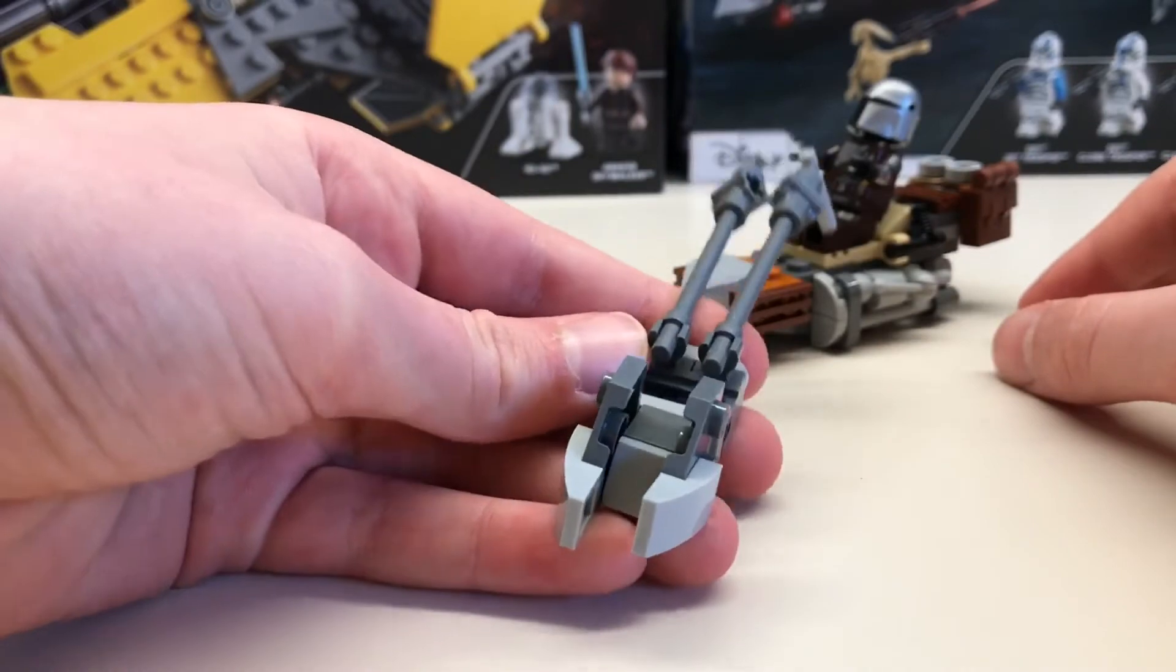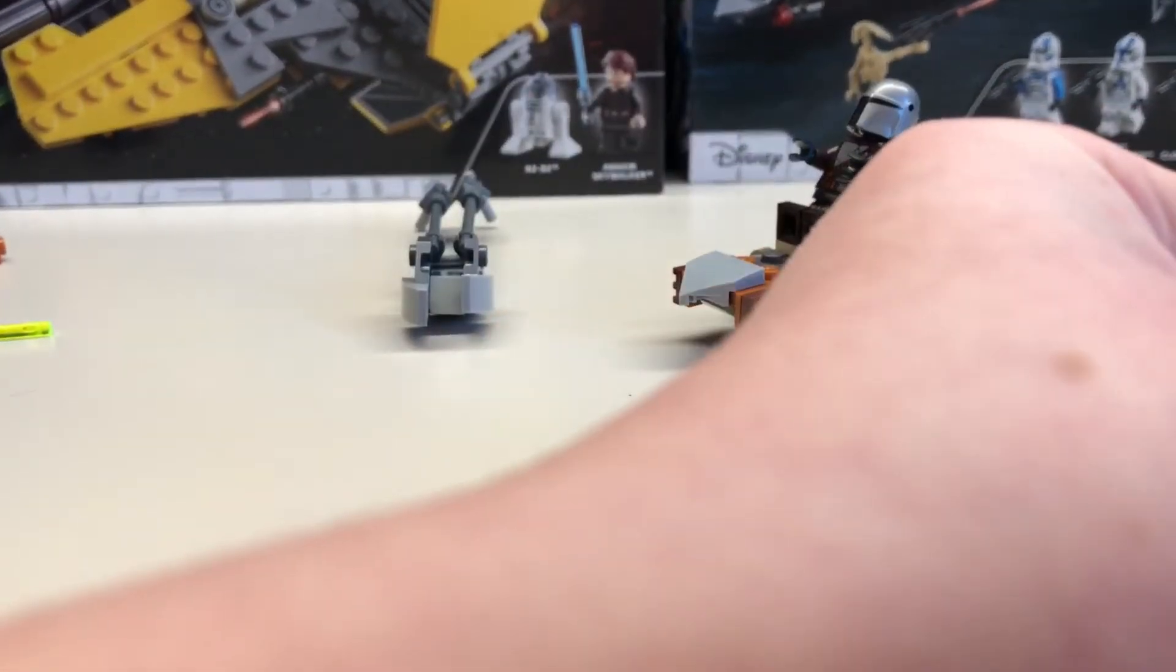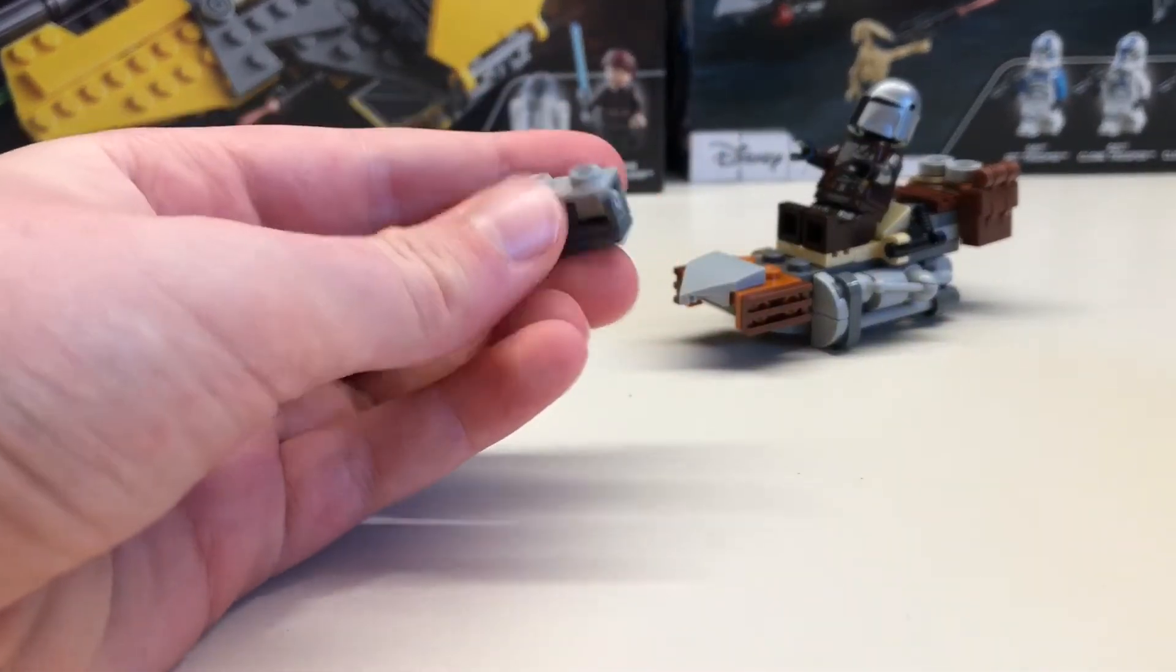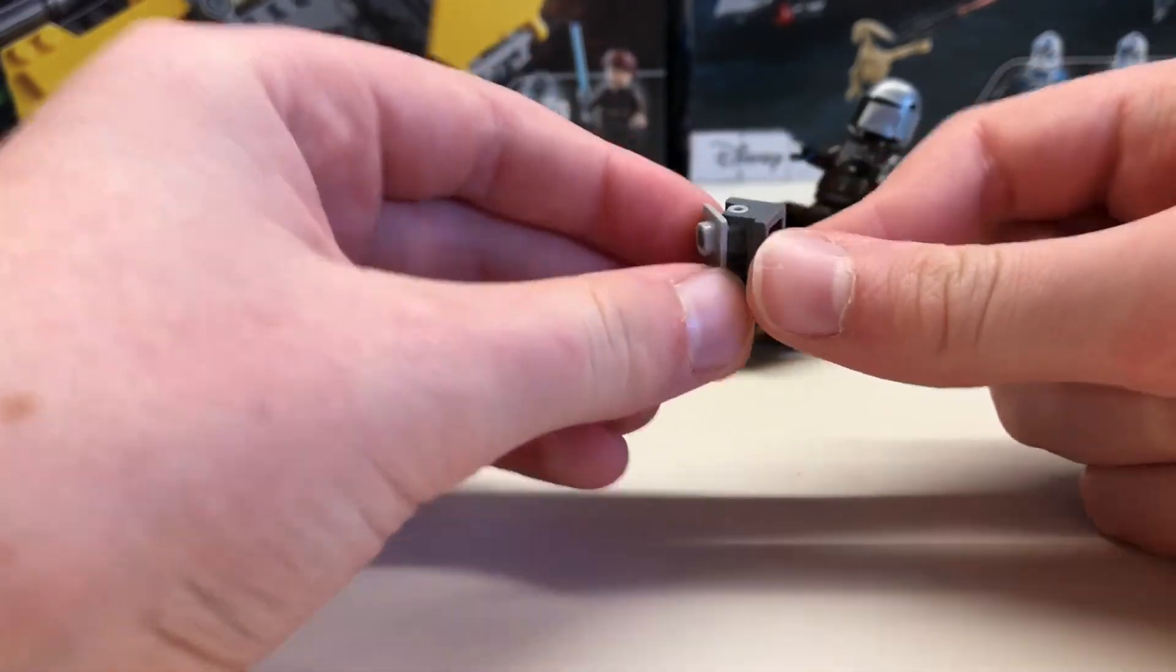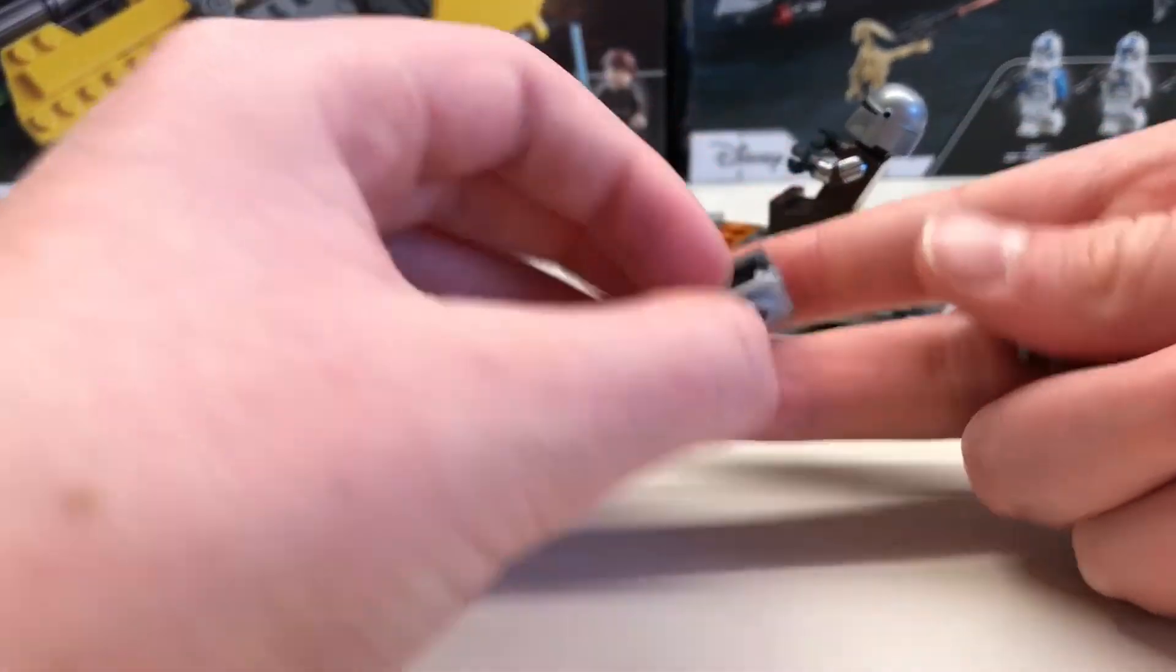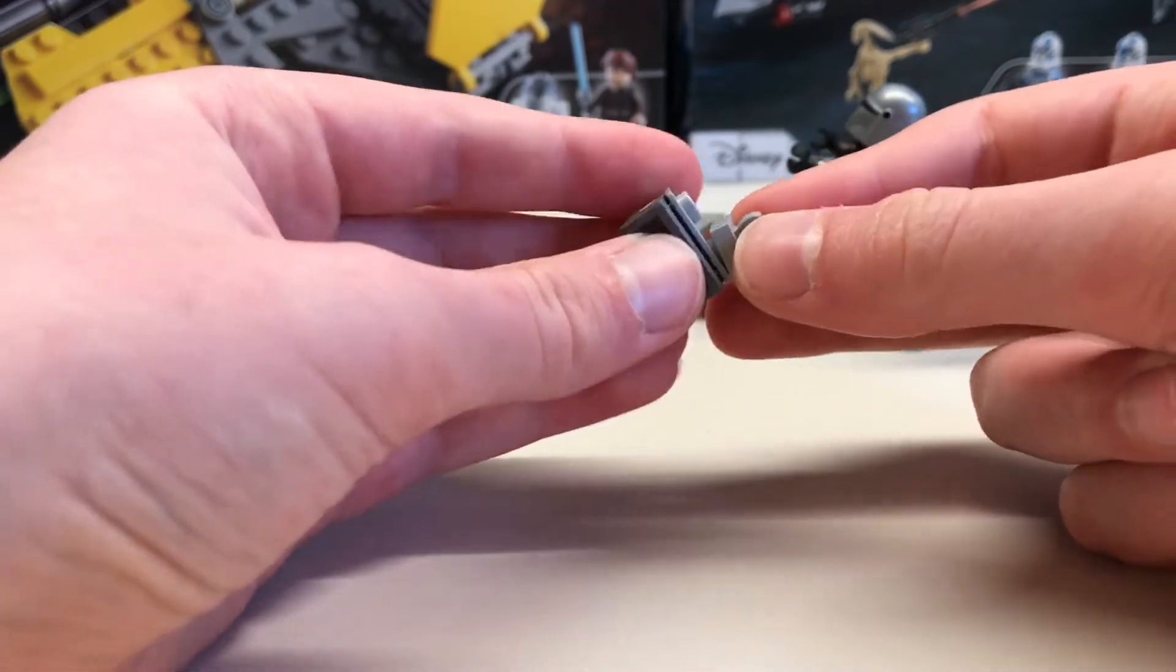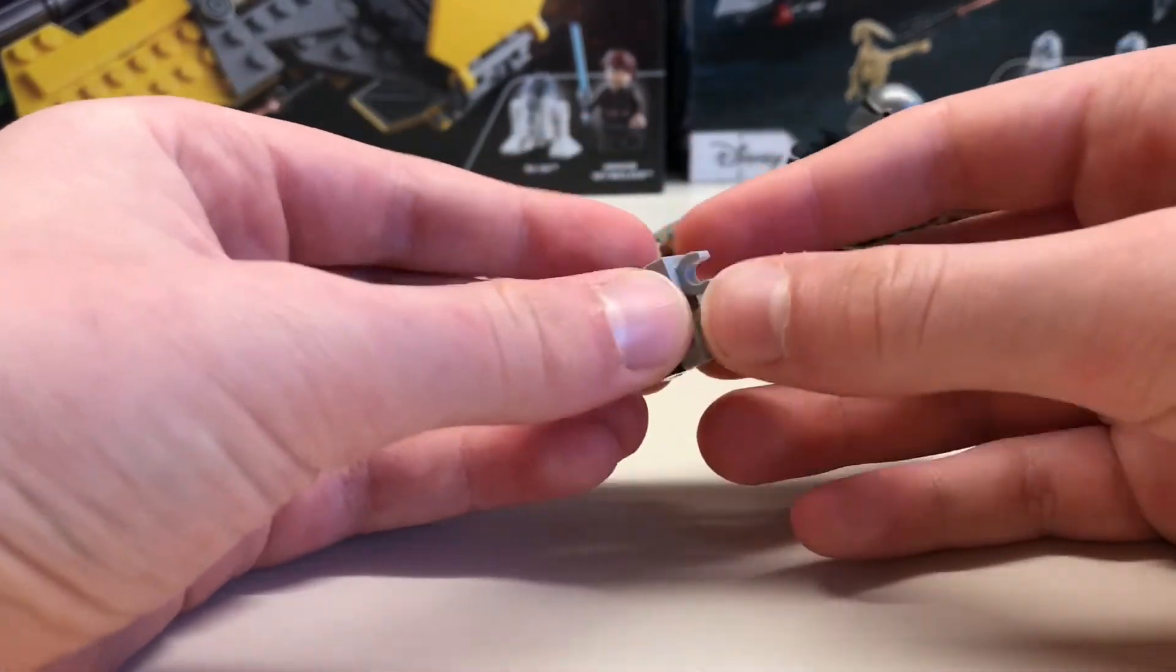But how do we attach it? Well, I'll show you how to do that now. What you'll need is one of these light grey 1x2 bendy pieces, wiggly pieces, I don't know. They were used here. So you'll need this and two clips, and just put the clips on the top as so.